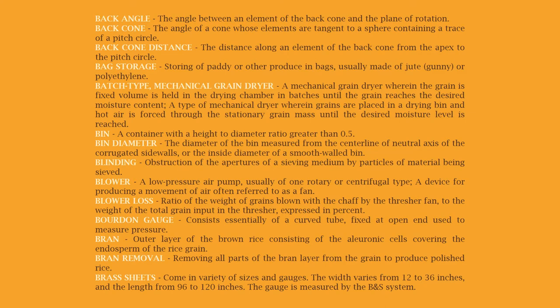Bag storage: storing paddy or other produce in bags, usually made of jute, gunny, or polyethylene. Batch type mechanical grain dryer: a mechanical grain dryer wherein a fixed volume of grain is held in the drying chamber in batches until the grain reaches the desired moisture content; a type of mechanical dryer wherein grains are placed in a drying bin and hot air is forced through the stationary grain mass until the desired moisture level is reached.